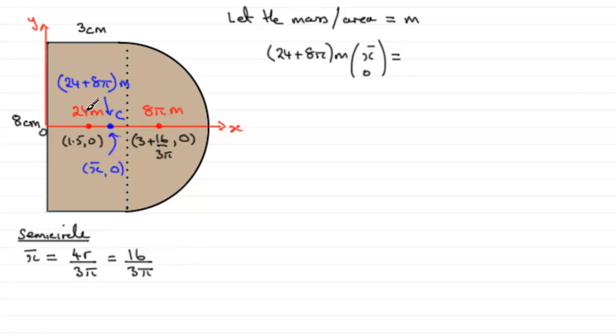And that's going to equal the moment of each of these masses about the x and y axis. So for the 24m mass, we've got 24m multiplied by (1.5, 0). And then we've got to add to that the moment of this mass, the 8πm, so it's going to be 8πm multiplied by (3 + 16/3π, 0).